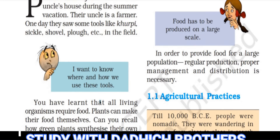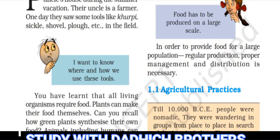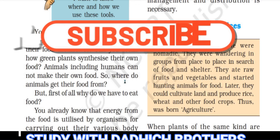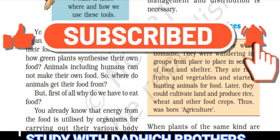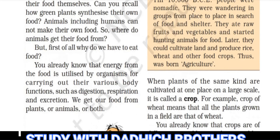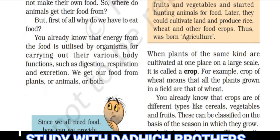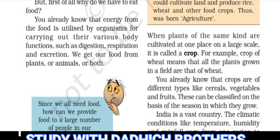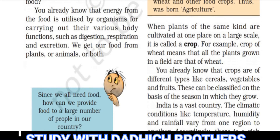I want to know where and how we use these tools. You have learned that all living organisms require food. Plants can make their food themselves. Can you recall how green plants synthesize their own food? Animals including humans cannot make their own food. So where do animals get their food from? Why do we have to eat food? The energy of food is utilized by organisms for carrying out various body functions such as digestion, respiration and excretion. We get our food from plants or animals or both.